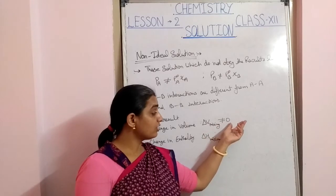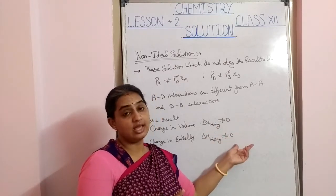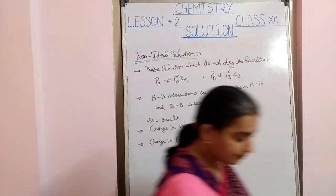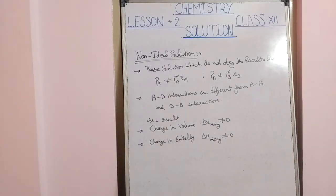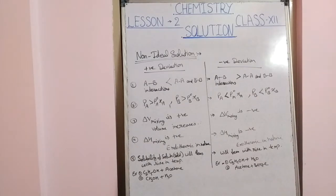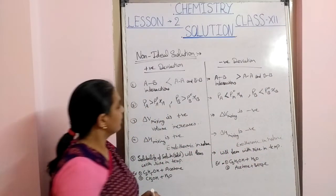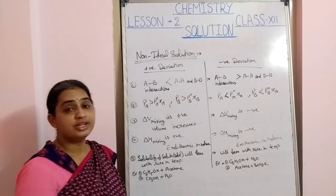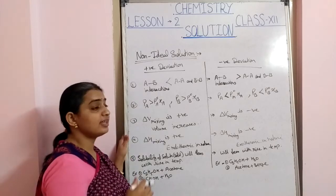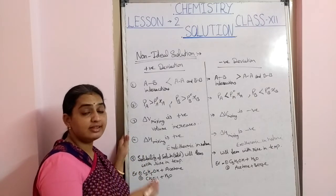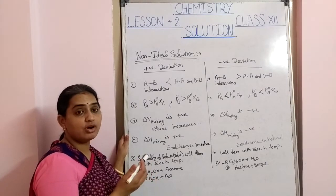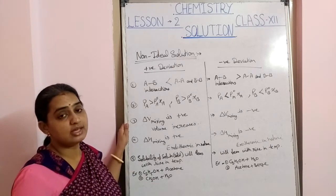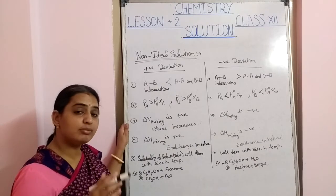For non-ideal solutions, delta V not equal to zero means change in volume, and delta H not equal to zero means change in enthalpy. These changes can be positive or negative. Now the next classification of non-ideal solutions is on the basis of deviation from Raoult's Law. The change depends on the interactions between A-B, A-A, and B-B molecules — the A-B interaction may be greater or less than A-A and B-B.